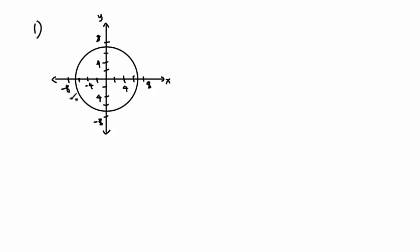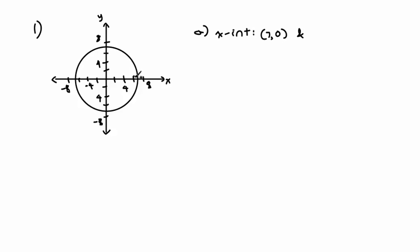Alright, for number 1, we have this circle and for part a, we need to state the x-intercepts of this circle. So what are the x-intercepts? Well, counting out: 2, 4, 6, and 8 — so this right here is 7. The x-intercepts are (7, 0) and also (-7, 0), where it crosses the x-axis on the other side.